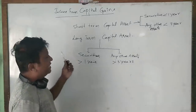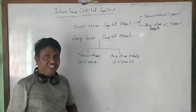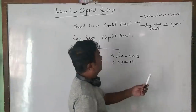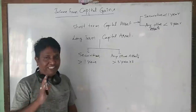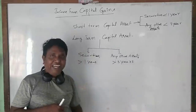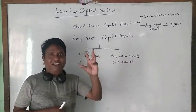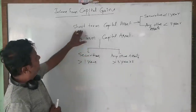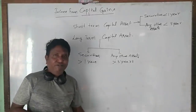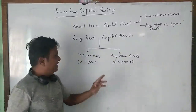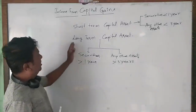Short-term capital gain is a gain arising by selling a capital asset within one year in case of securities, or within three years in case of any other assets, from the date of purchase. Long-term capital gain is any profit arising from the sale of such capital assets held for more than one year in case of securities, or more than three years in case of any other assets, from the date of purchase.